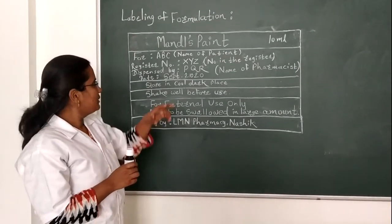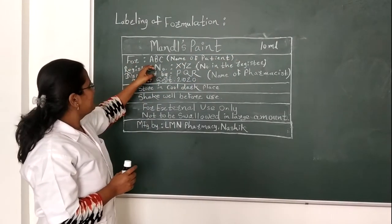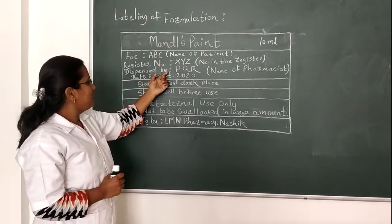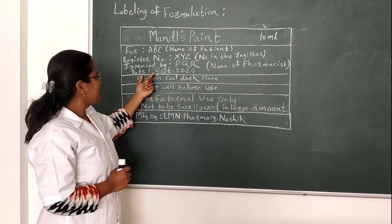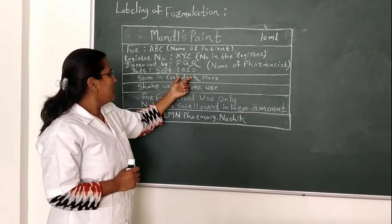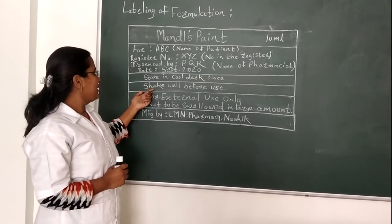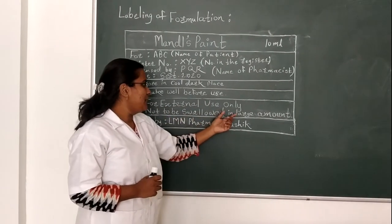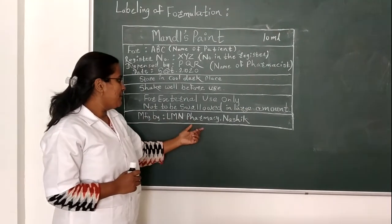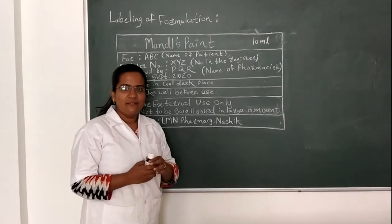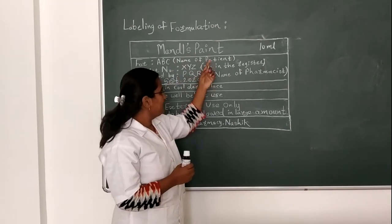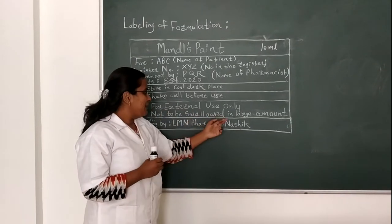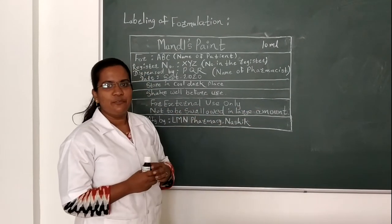The prepared label is affixed to the container. The label includes: patient name, register number, dispensed by the pharmacist, manufacturing date October 2020, storage condition — cool and dark. Directions: for external use only; not to be swallowed in large amounts. Manufactured by LLL Pharmacy. Result: 10 ml of Mandl's Paint is submitted in an amber-colored plastic bottle with special instructions — not to be swallowed in large amounts and for external use only. Thank you.